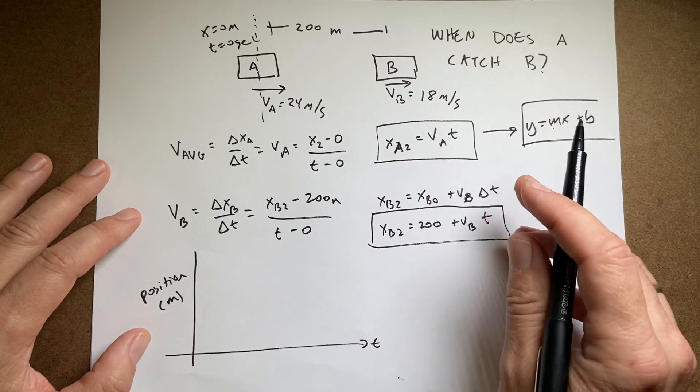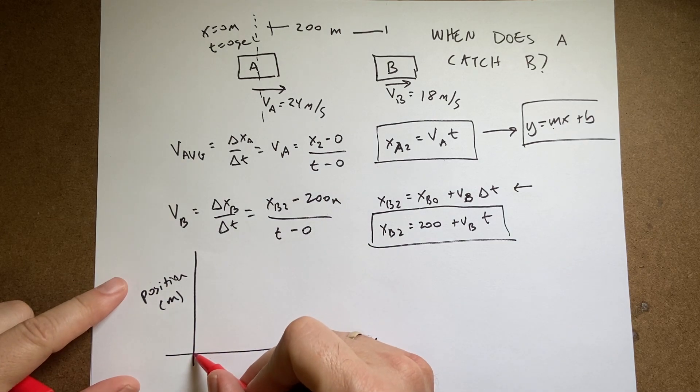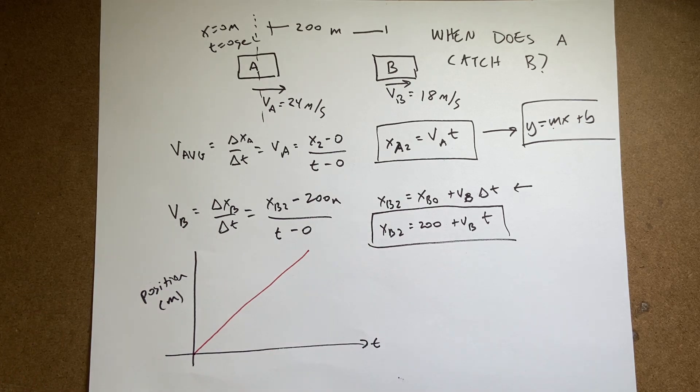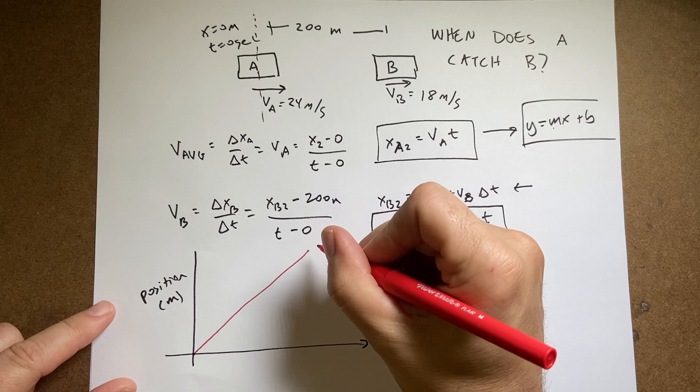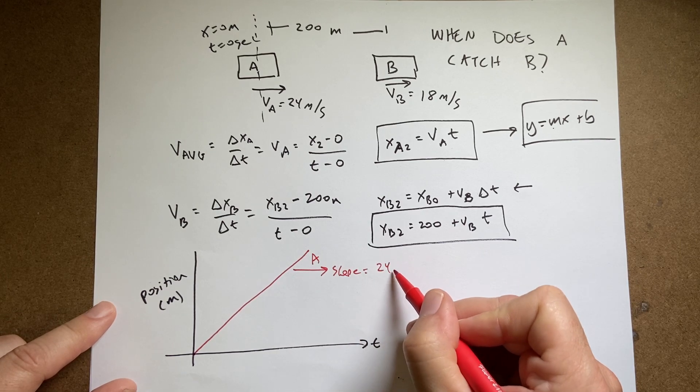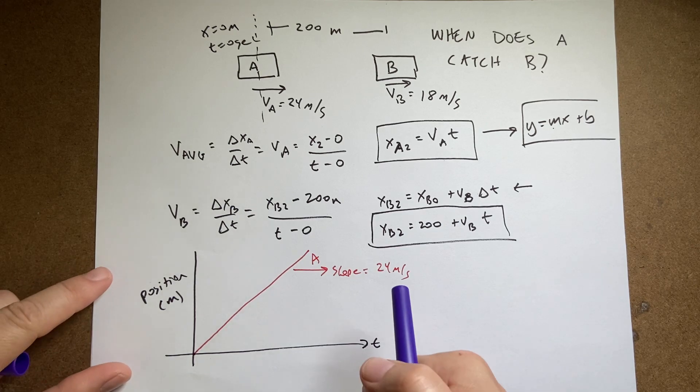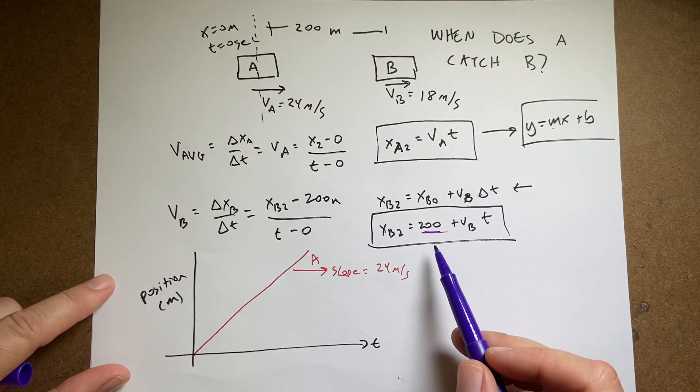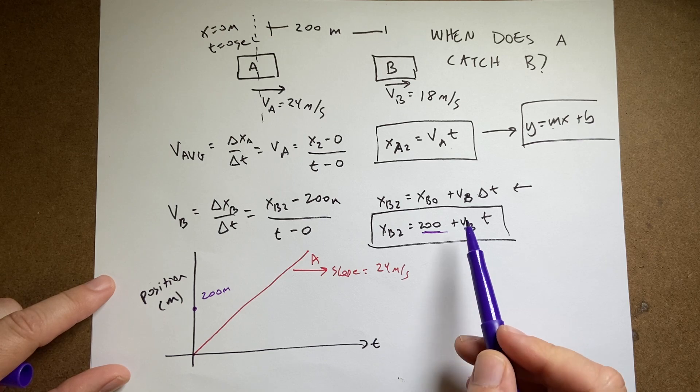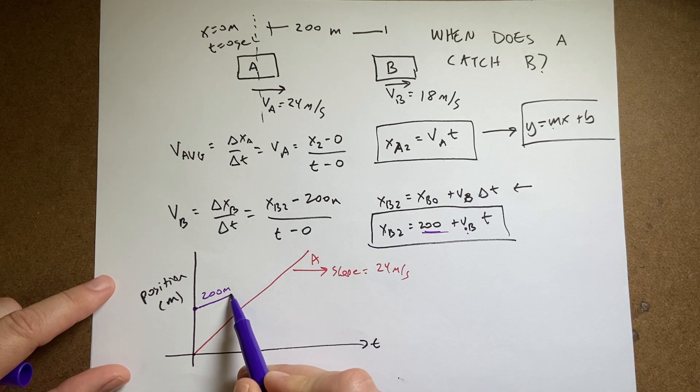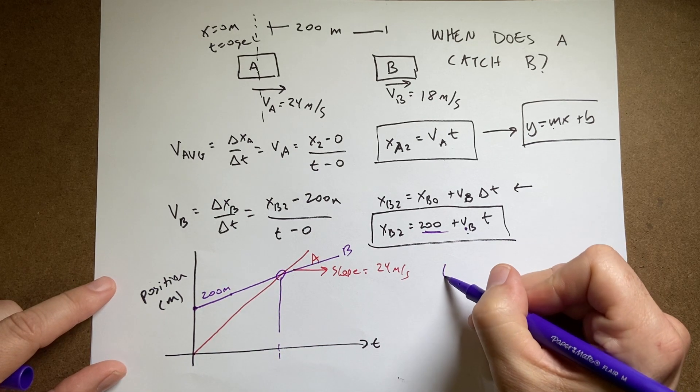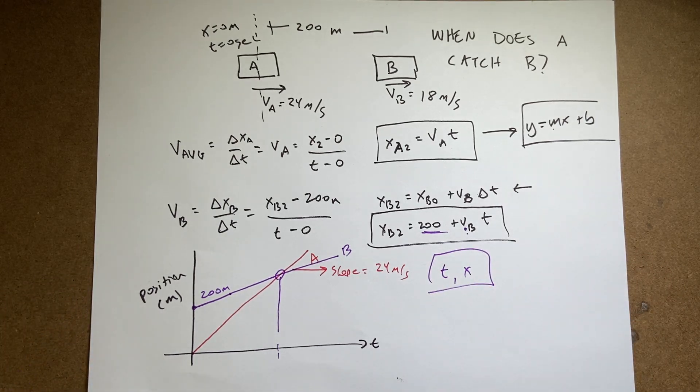This one's easy since the y-intercept is zero. I don't need to deal with that. So let's just sketch this. The position as a function of time. And this is car A. The slope of this line would be 24. Now let's do car B. Car B has, this 200 means that's the y-intercept. So this point right here, that's 200 meters. Now what's different about this slope versus that slope? Well, this slope is lower. So it's actually going to be like this. This is B. And then what is true about the place where those two cross? They have the same time and they have the same x.